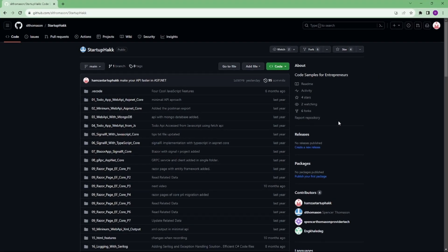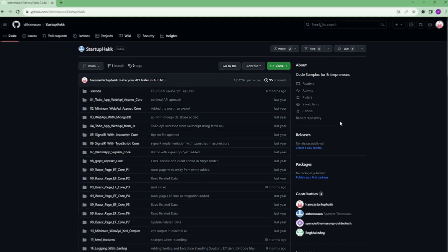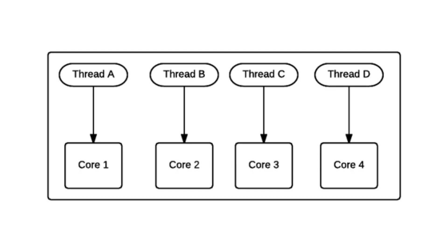TPL stands for Task Parallel Library in C#. It's a set of classes and APIs provided by the .NET framework to simplify the process of writing parallel and asynchronous code. TPL makes it easier for developers to take advantage of multi-core processors and write code that can perform tasks concurrently, improving the performance of their applications.